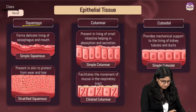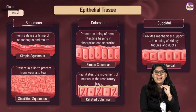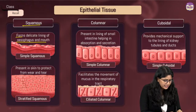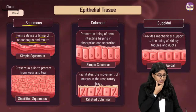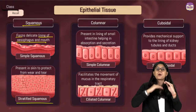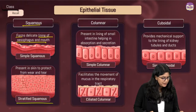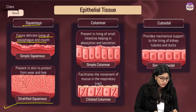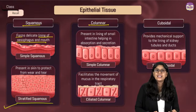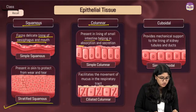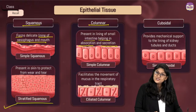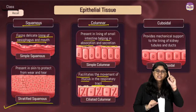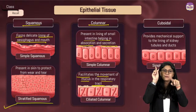Simple squamous tissue is flat and not very regular in shape — it forms a thin lining of the ears, fingers, and mouth. Stratified epithelium has many layers and plays a very important role in protecting the skin from wear and tear. Columnar epithelium is present in the lining of the small intestine, helping in absorption and secretion. Ciliated columnar epithelium facilitates the movement of mucus in the respiratory tract using cilia.